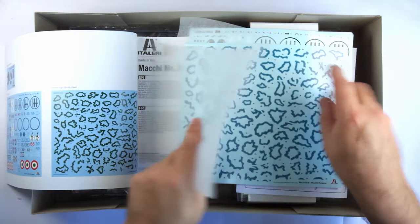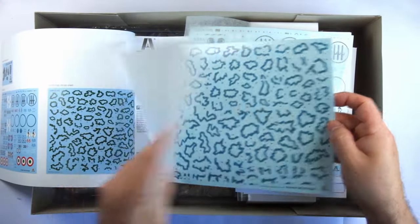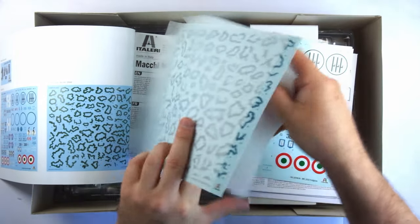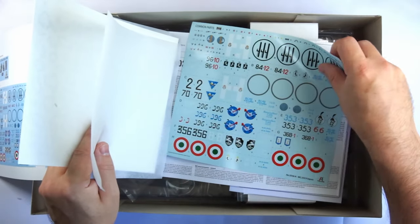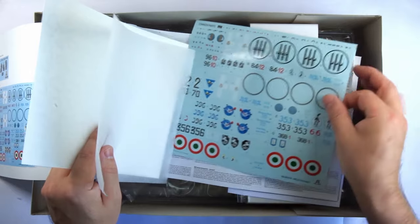Immediately inside the cover of the instructions we have two decal sheets. The first set of smoke ring camouflage, the second a comprehensive set of markings for the different aircraft presented.